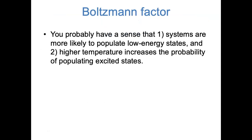Even though we haven't yet quantitatively talked about temperature, you probably have an intuitive sense of certain things. You probably know, for example, that systems are more likely to populate low energy states. We often talk about lower energy states as being more stable, and you've also seen things like the Aufbau principle, where electrons tend to populate the lowest energy atomic orbitals before higher energy ones. You probably also have a sense that higher temperatures tend to increase the probability of populating excited states — for example, higher temperatures tend to make reactions more likely to happen, to cross over transition state barriers. But what we're going to do now is to quantify these ideas.